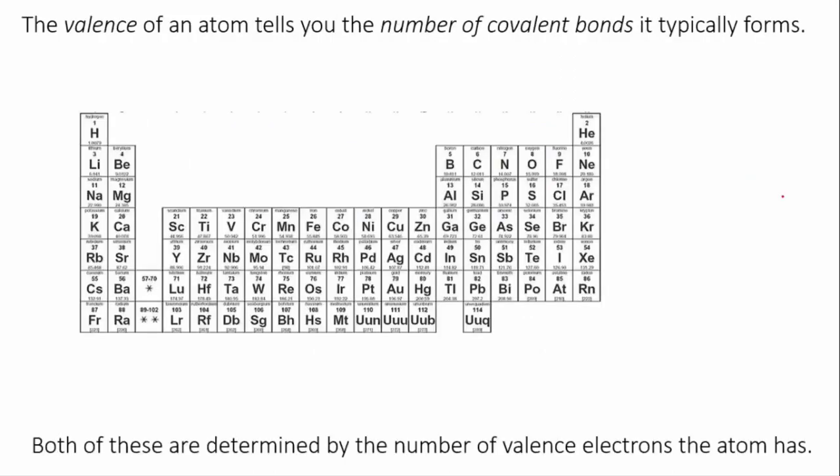So to work out the number of bonds typically formed by atoms of a particular element, we look at its valence. And remember we're only dealing with non-metals here because it's covalent bonding. So that's groups 4, 5, 6, 7 and 8, along with hydrogen in group 1.